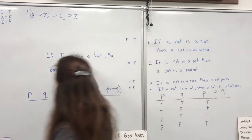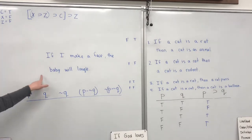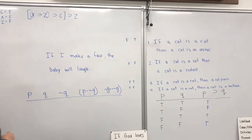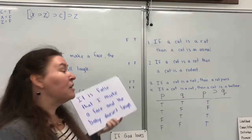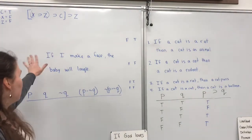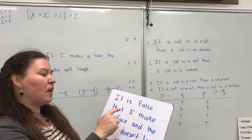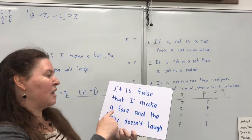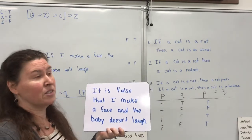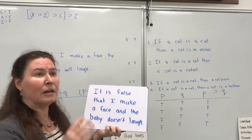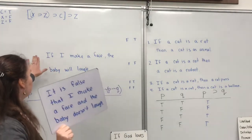Let's go back to this one. If I make a face, the baby will laugh. That makes sense — if I make a face, the baby will laugh. And if we know this baby well, it's probably going to be true-true. There's a logically equivalent thing we can say. If we know that if we make a face the baby will laugh, then we know it is false that I make a face and the baby doesn't laugh. Every time I make my silly face, I know this baby well and he's going to laugh. So it is false that I make my silly face and the baby doesn't laugh. That is a logically equivalent statement to this hypothetical.